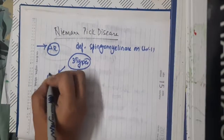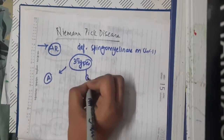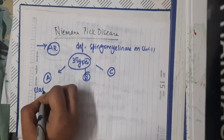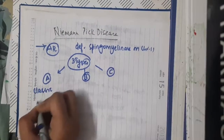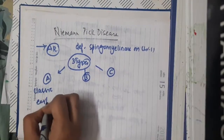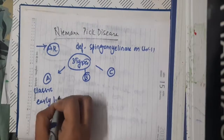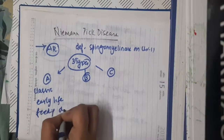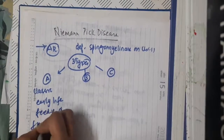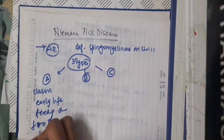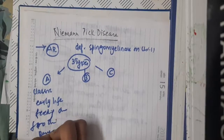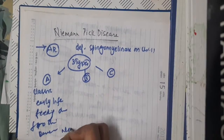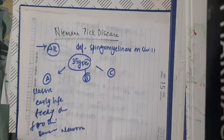Type A is the classic form which begins early in life, where the baby develops feeding difficulties, failure to thrive, and developmental delay. Later, the baby develops neuro regression.